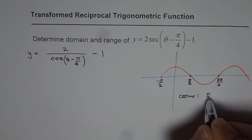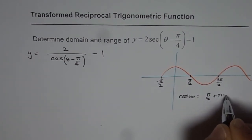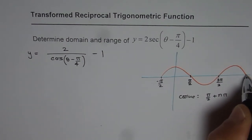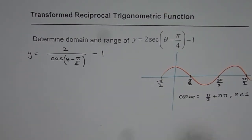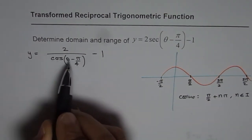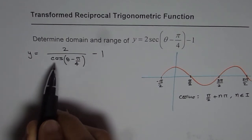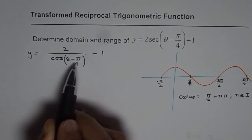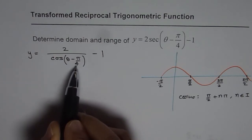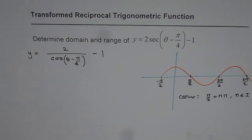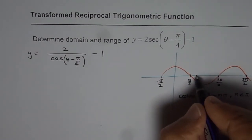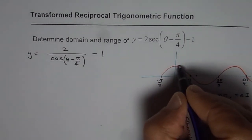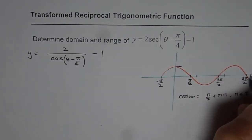So zeros for cosine are at pi by 2 plus n pi, where n belongs to integers. Now what we have here in the denominator is that the cosine function has been translated horizontally pi by 4 units to the right. So since it has been translated pi by 4 units to the right, every point moves by pi by 4 to the right.